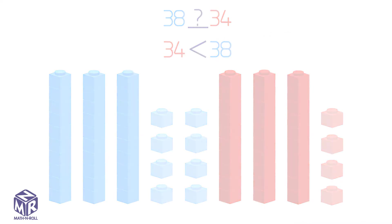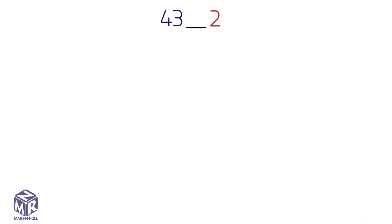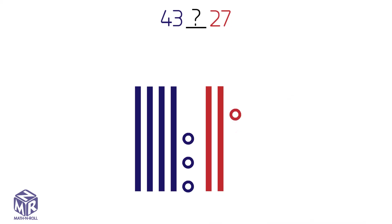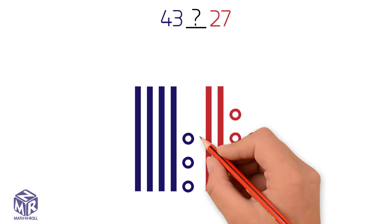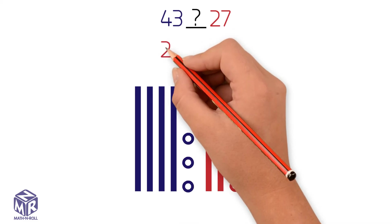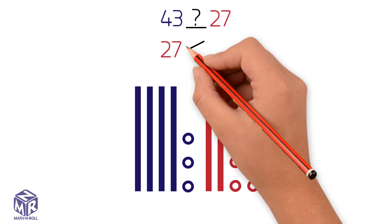Let's try another example. Which is less, 43 or 27? 43 has four tens and three ones. 27 has two tens and seven ones. First we compare the tens. Two tens is less than four tens, so 27 is less than 43.